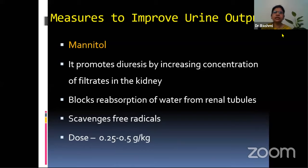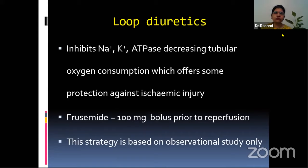Other measures to improve urine output include mannitol, which improves diuresis by increasing the concentration of filtrate in the kidney and causes intracellular release of prostaglandins. It blocks reabsorption of water from renal tubules and scavenges free radicals. It can be given in doses of 0.25 to 0.5 grams per kg. Loop diuretics are also useful — they inhibit sodium-potassium ATPase, decreasing tubular oxygen consumption, offering some protection against ischemic injury. We use a 100 mg bolus dose prior to reperfusion.